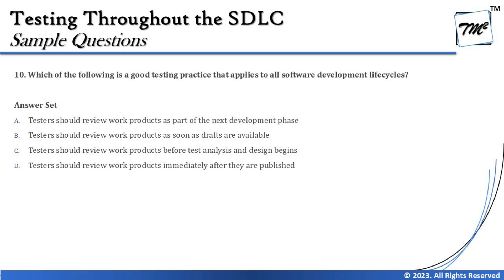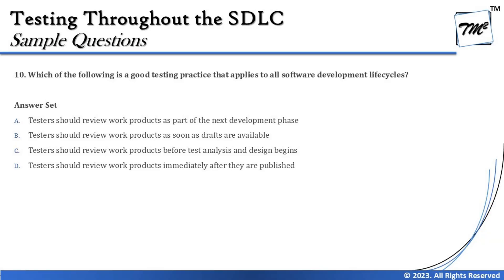Option B says testers should review work products as soon as drafts are available — yes, that's perfectly in line with the four characteristics. Option C says testers should review work products before test analysis and design begins. That's not correct because analysis and design is itself where reviewing happens — going through documentation to identify anomalies is part of that activity. Option C is a trick designed to blend with the characteristic about conducting analysis during early life cycle phases.